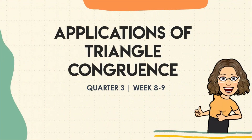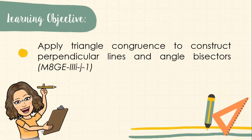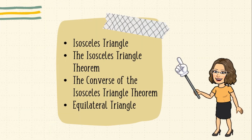We are now on the last lesson of this quarter, which is the Applications of Triangle Congruence. At the end of this lesson, you are expected to apply triangle congruence to construct perpendicular lines and angle bisectors. In the first part of this lesson, you will learn about isosceles triangle, the isosceles triangle theorem, the converse of the isosceles triangle theorem, and the equilateral triangle.